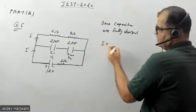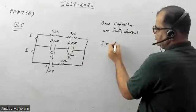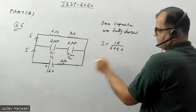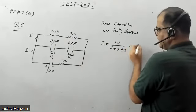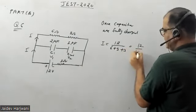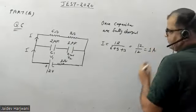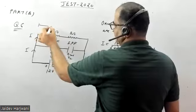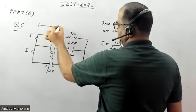If I calculate the value of current I, that will be simply 12 upon 6 ohm plus 3 ohm plus this 3 ohm, so 12 upon 12 that is 1 amp. 1 amp current is flowing. If I calculate total voltage drop across this branch, that will be 9 volts.